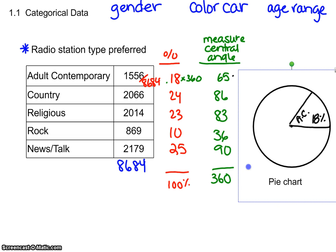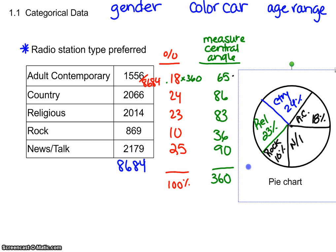The next one is 86 degrees, which is almost a right angle — that's country at about 24%. Then about 83 degrees, a little shy of a right angle, is religious at 23%. Rock is about 36 degrees — a smaller slice because it's only 10%. The remaining part is news and talk radio, about a right angle, so 25%. Always label the chart — this is 'Radio Stations Preferred.' That's one way to display categorical data.